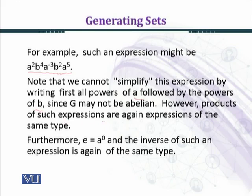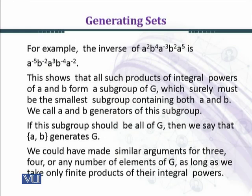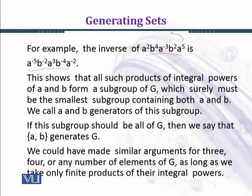However, products of such expressions are again expressions of the same type. Furthermore, the identity e equals a raised to power 0, and the inverse of such an expression is again of the same type. For example, the inverse of a² b⁴ a⁻³ b² a⁵ is a⁻⁵ b⁻² a³ b⁻⁴ a⁻². You can see that we are taking the inverses of the elements appearing in the product from right to left.